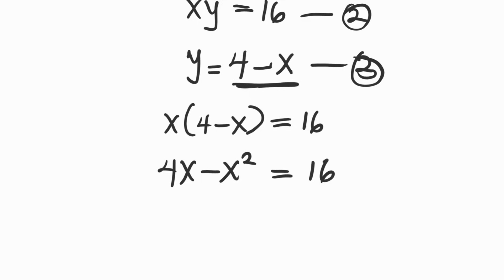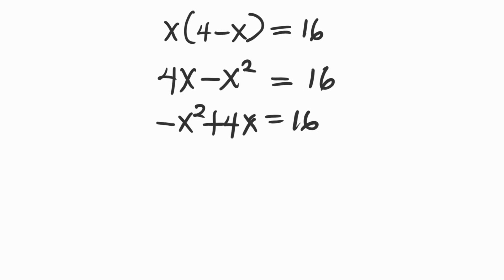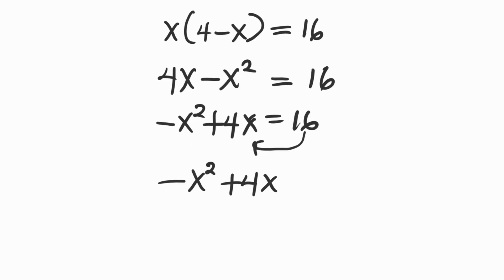If we rewrite this we have x squared plus 4x equals 16. Now let's move 16 over to the left-hand side, and then we have x squared plus 4x minus 16 equals 0.